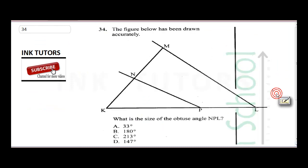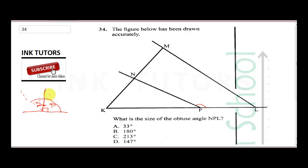Question 34: the figure has been drawn accurately. What is obtuse angle MPL? A straight line perpendicular bisector gives 90°; half of that is 45°. So 90 plus 45 equals 135. Looking at the options, 33° is too small, 180° is a straight line, and 213° is not an obtuse angle. The correct answer is 147°, which is option D.